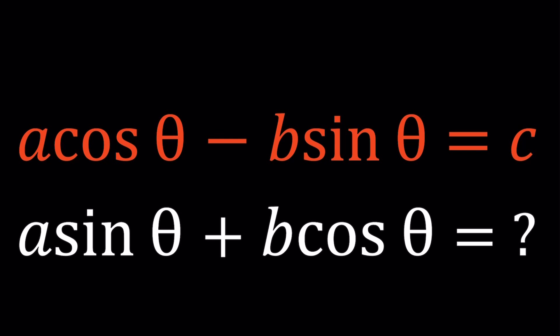So we could actually replace A, B, C with some numbers and make it specific like 3 cosine theta minus 4 sine theta is equal to some other number. And then find the second expression. But this is more general, and it's kind of nice that we can do it in the general form.